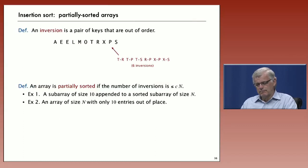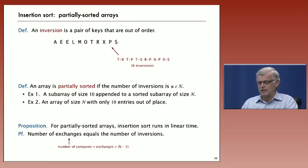And partially sorted arrays appear often in practice. For example, if you have a large array that's sorted except for just a few unsorted elements appended at the end, it's going to be partially sorted. Or another case is if you only have a few entries out of place, the array is going to be partially sorted. These types of things arise often in practical applications.